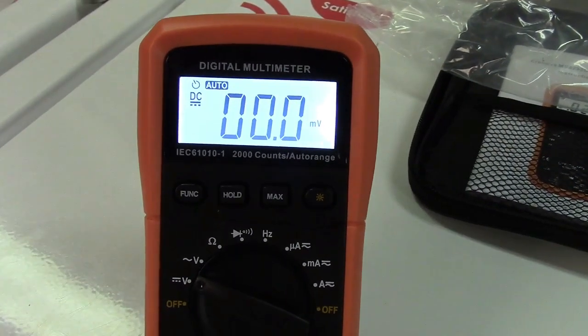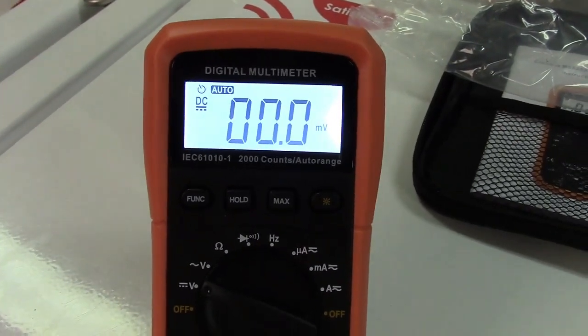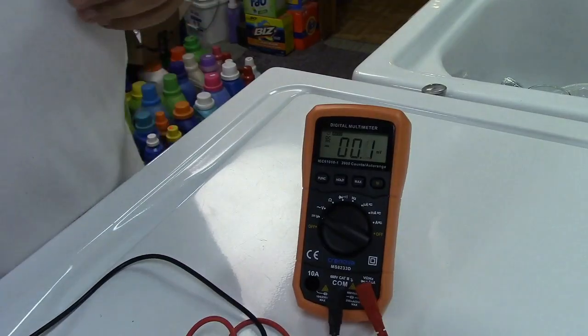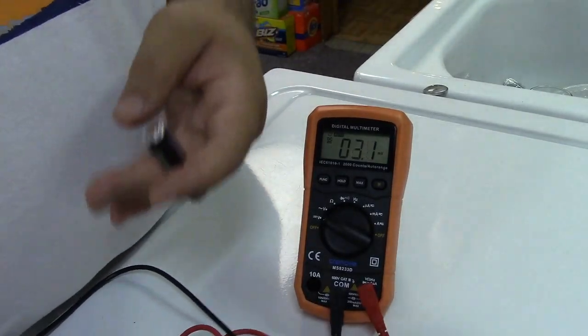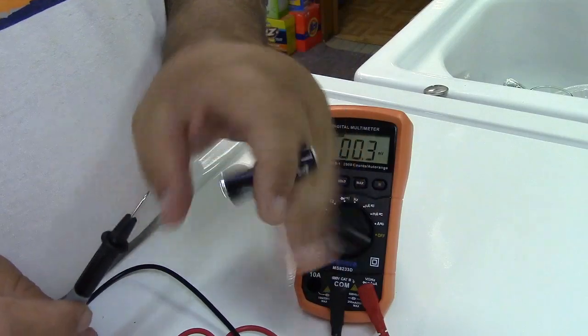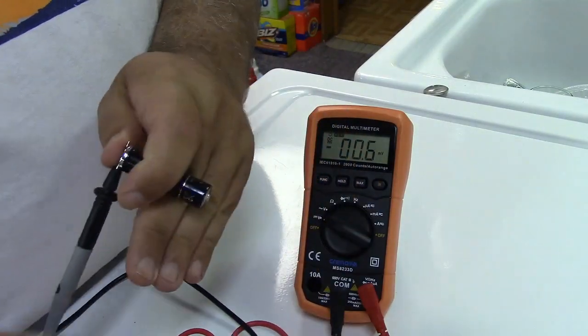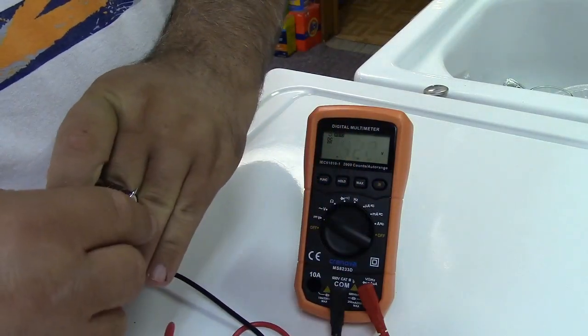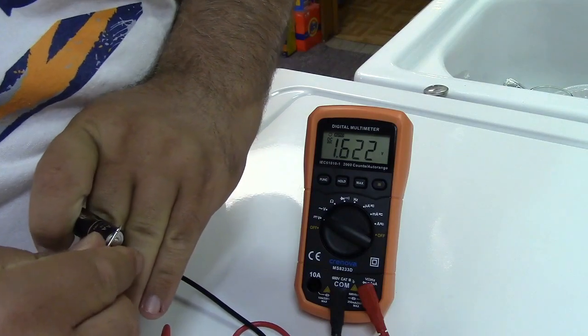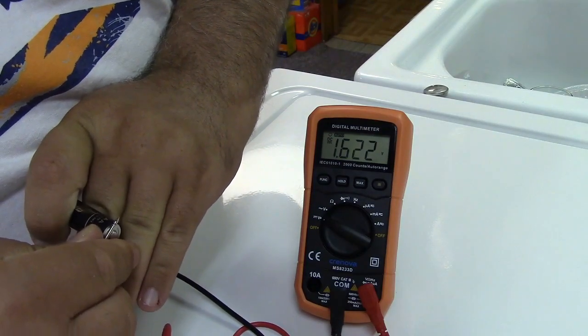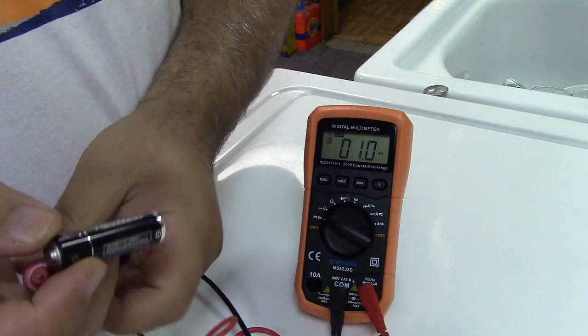So now let's measure a couple of different things. We're all set here. I have this still on the DC volt scale and this is just an old AA battery that's laying around. We can hook that up and that is reading 1.622, so that battery looks like it's in good shape.